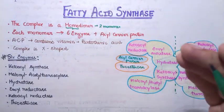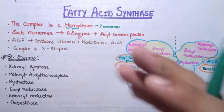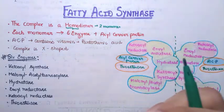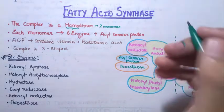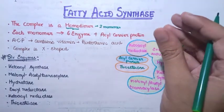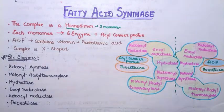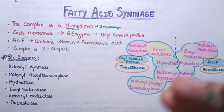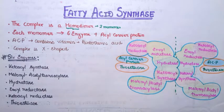Each monomer of the fatty acid synthase complex consists of six enzymes and an acyl carrier protein. The acyl carrier protein is the protein part that carries the acyl group, or fatty acid. In fatty acid synthesis, you need to transport parts of the fatty acid from one enzyme to another, and the acyl carrier protein does that — it helps in the translocation of the fatty acid. The six enzymes catalyze the different reactions involved in fatty acid synthesis.